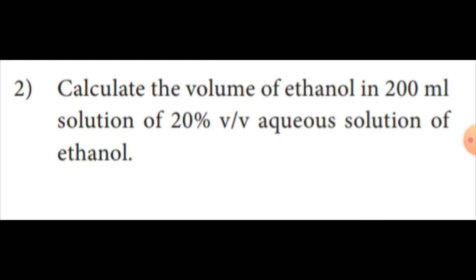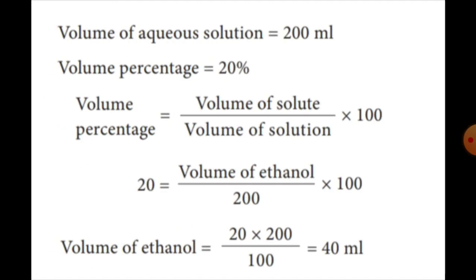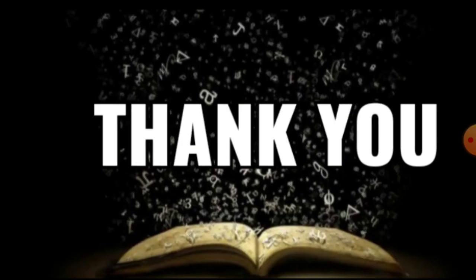Calculate the volume of ethanol in 200 mL of a 20% (v/v) aqueous solution. Volume percentage = volume of solute / volume of solution × 100. So 20 = volume of ethanol / 200 × 100. Volume of ethanol = 40 mL. Thank you students for watching.